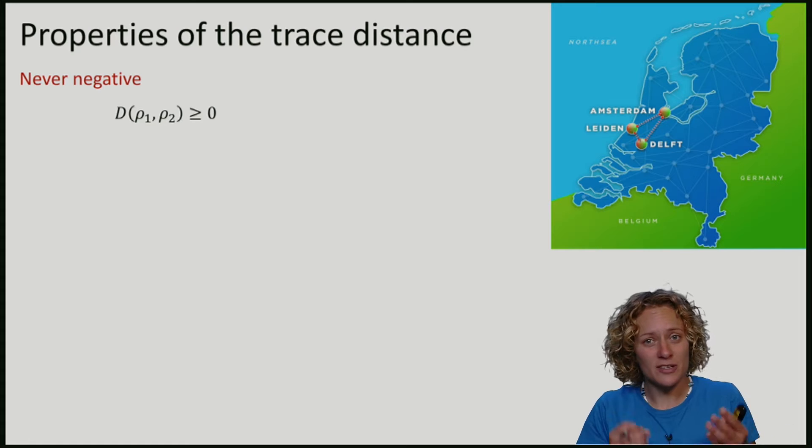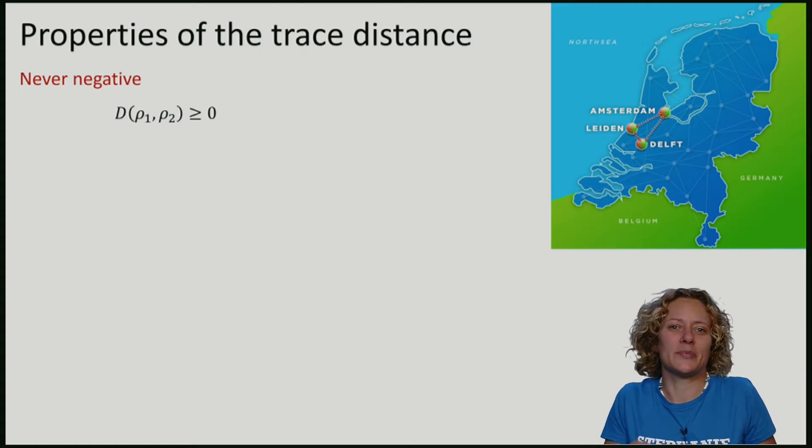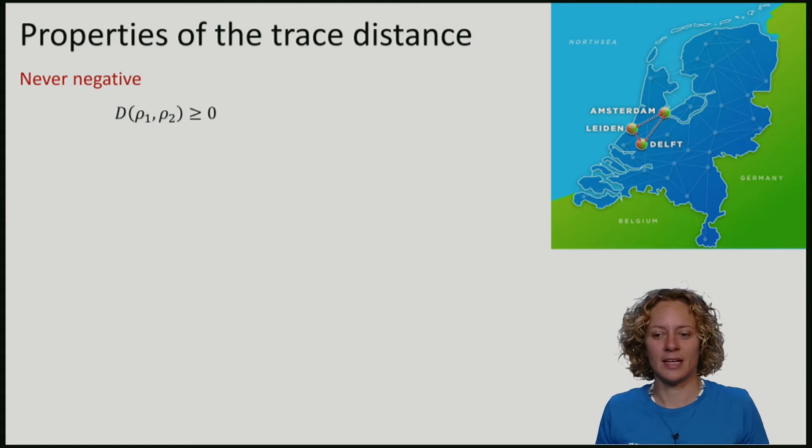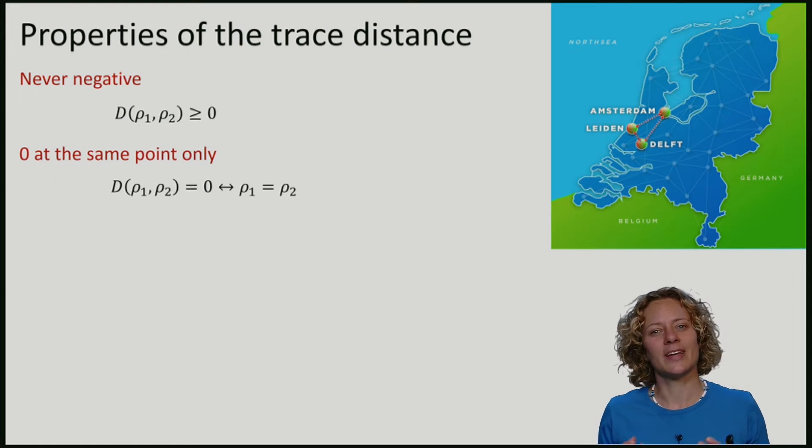A distance to somewhere is zero only if I'm at the same point. In terms of the trace distance, it means that the trace distance is zero if and only if the two states are the same.